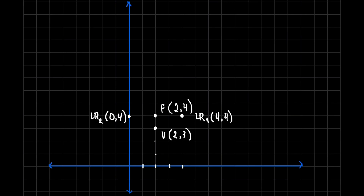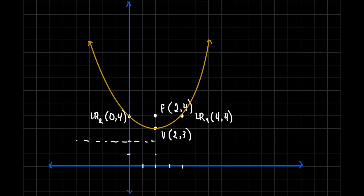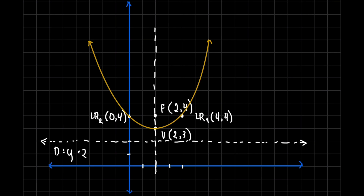We can now sketch the graph. From the vertex going to LR₂, that is how it behaves; from the vertex going to LR₁, that is how it behaves. That is our parabola. The directrix is at y equals 2 — represented as a broken line. Our axis of symmetry is x equals 2, also a broken line.